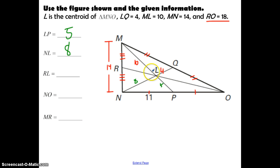And then RL, we're looking for this segment. Now this is from midpoint to centroid, and that's one-third of the entire segment RO. Here we have RO is 18. So if we want one-third, we just need to divide that by 3, and we get 6. So RL is going to be 6. Then we need to find NO. NO is the length from N all the way over here to O. Now we know that P is the midpoint. If NP is 11, that means PO is also 11. So NO is going to be 22.